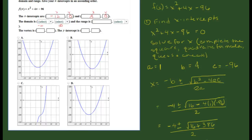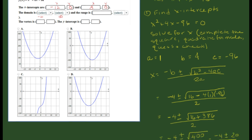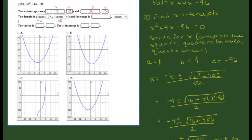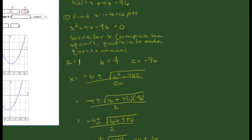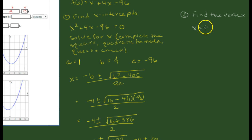We'll hold off on the range for a moment because to determine the range we need to find the vertex first. To find the vertex, they give you the formula: x = negative b over 2a. The vertex is either the lowest point on the graph if the parabola opens upward, or the highest point if it opens downward.